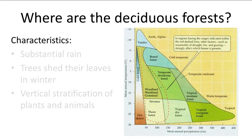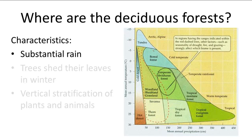The deciduous forest is kind of like a happy medium between the three extreme corners, so it experiences a substantial amount of rain and changing seasons. They are mainly found in the northern hemisphere, although there are some smaller regions in New Zealand and Australia, and in North America they cover the northeast shore.